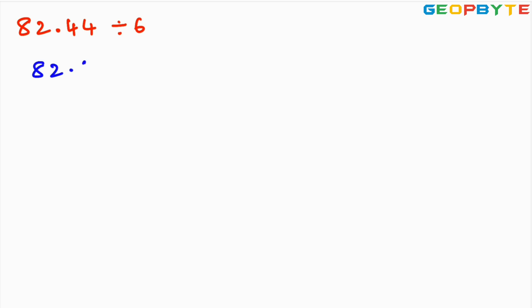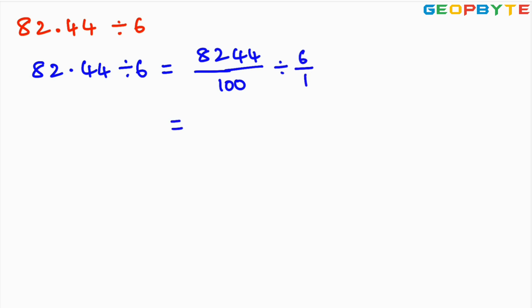Next: 82.44 divided by 6. The first step is to convert into fractions. We get 8244 by 100 because after the decimal point we have 2 digits, so we divide by 100. Divided by 6 by 1. We need to find the reciprocal, giving us 8244 by 100 into 1 by 6.